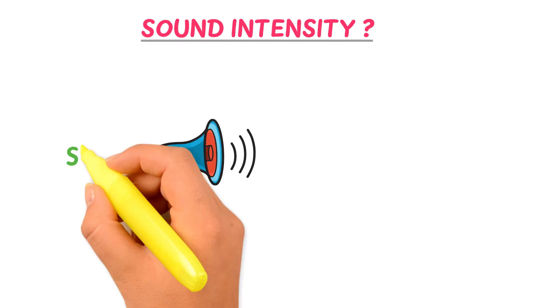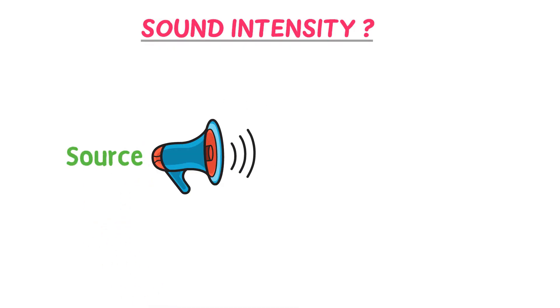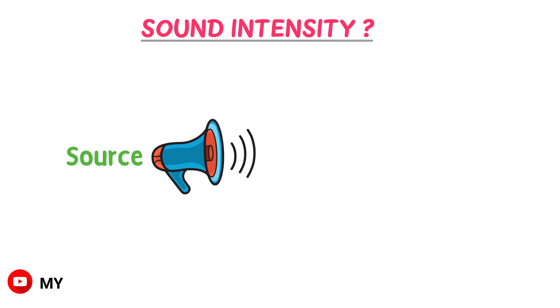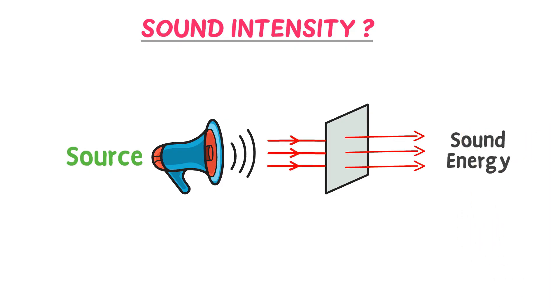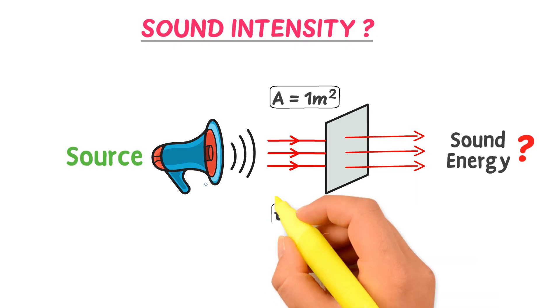Firstly, let me teach you what is sound intensity. Consider a source producing some sort of sound. We know that sound spreads over larger and larger surface area as it moves away from the source. Now let's consider this sheet. Sound waves or sound energy can hit or pass through this sheet. Let the area of this sheet be 1 meter squared.